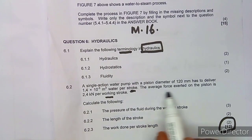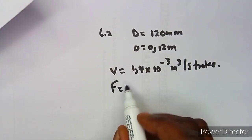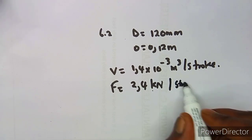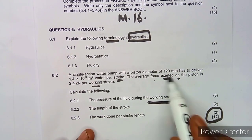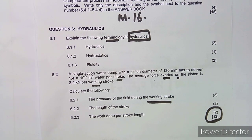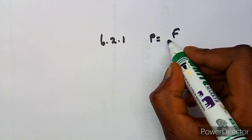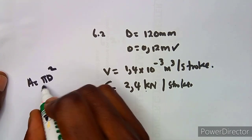The average force exerted on the piston during the working stroke is 2.4 kilonewtons, which is 2.4 × 10³ newtons, i.e., 2400 N. The question asks us to calculate the pressure of the fluid during the working stroke. We know that pressure equals force over area.